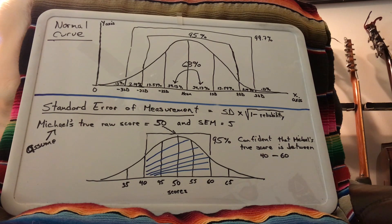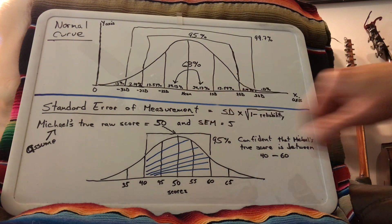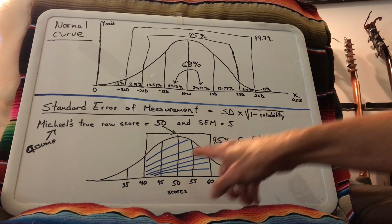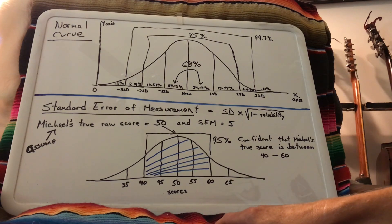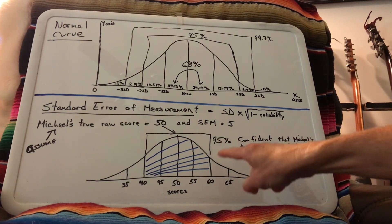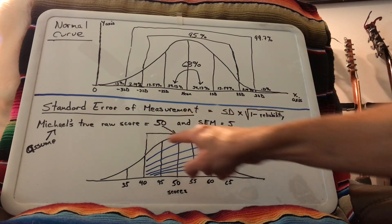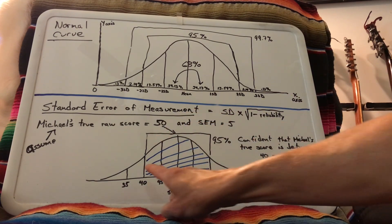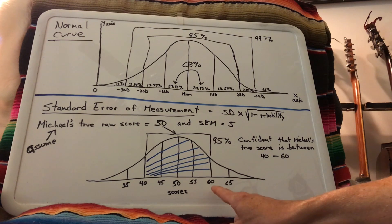So where the confidence interval comes from that you see with standard error of measurement is saying that if Michael took this test an infinite number of times, we're 95% confident that his true score would fall between 40 and 60.